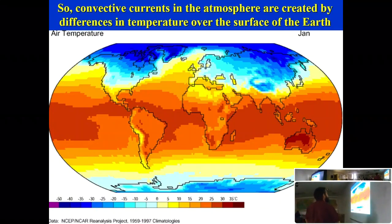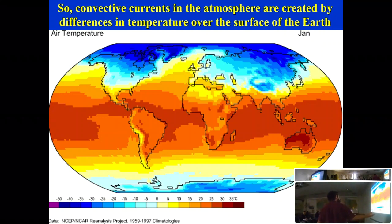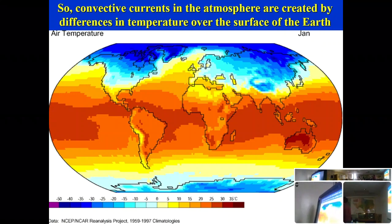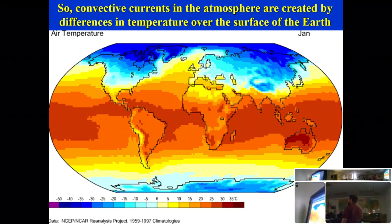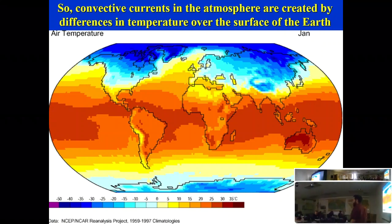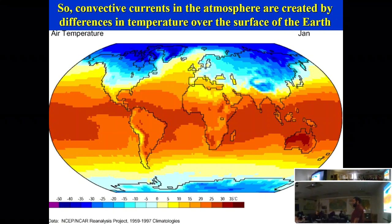Convective currents in the atmosphere are created by differences in temperature at the surface. Looking at a map of global surface temperatures, what causes those differences? One obvious factor is latitude — it gets colder as you go toward the poles.